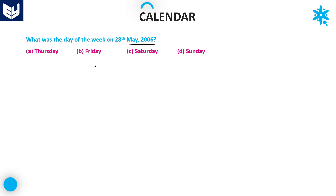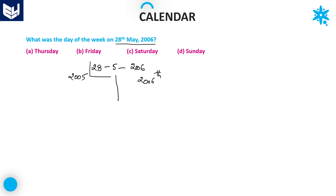28th May is the 5th month of 2006. As we already discussed in the previous sessions, 2005 years are already completed and the running year is the 2006th year. The left-hand side values are completed years, and in the running year we are calculating up to May 28th.